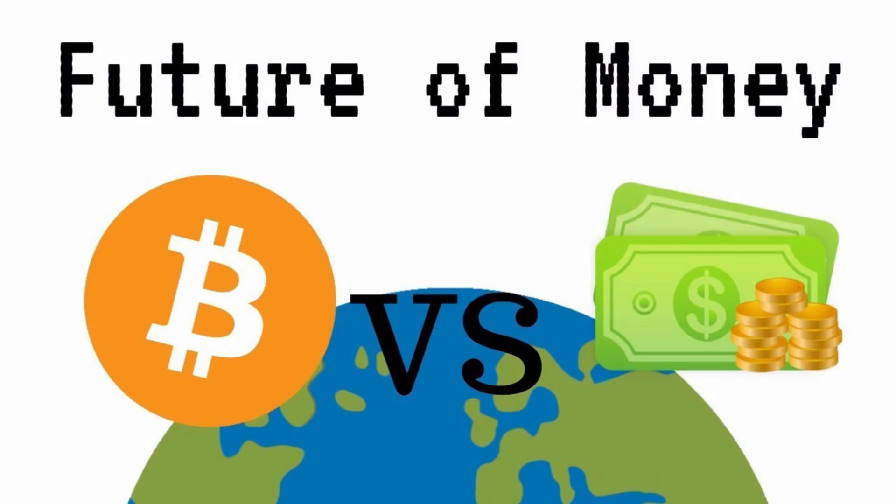Bitcoin is a form of cryptocurrency. It is also a form of cryptocurrency that enables free exchange. In our normal cryptocurrency, let us see how this cryptocurrency is used.